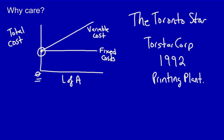Assume that Torstar prints a thousand newspapers. The total cost of those newspapers would be both the variable portion and the fixed portion. But notice, if they produce zero newspapers, they still have to incur 100% of the fixed costs. That indicates that there is risk involved in running this business. The risk is the possibility that the company's revenues, which they produce through the sale of newspapers, would not be enough to cover both the variable and the fixed costs.